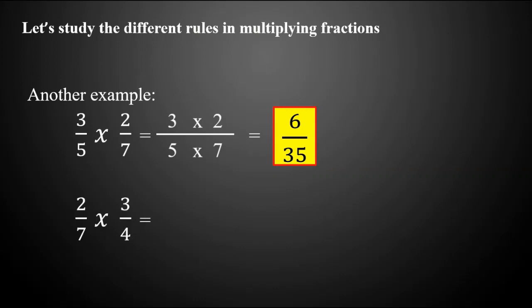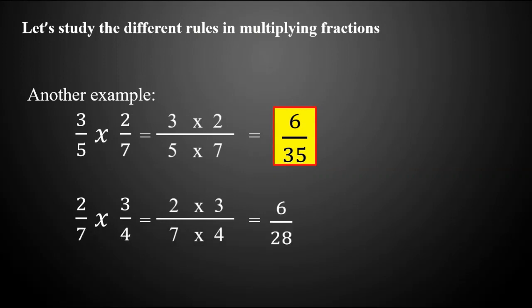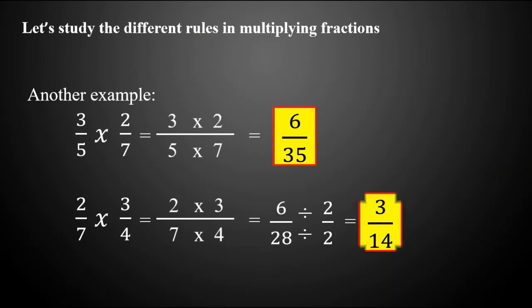Another example: two-sevenths times three-fourths. First, multiply both numerators — two times three — then multiply both denominators — seven times four. Two times three equals six, and seven times four equals twenty-eight. Six over twenty-eight is not yet in the lowest term, so we reduce it by dividing both the numerator and denominator by their greatest common factor, which is two. Six divided by two equals three, and twenty-eight divided by two equals fourteen. So our final answer is three over fourteen.